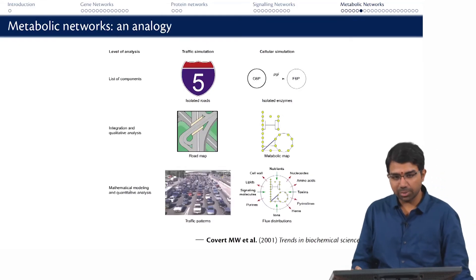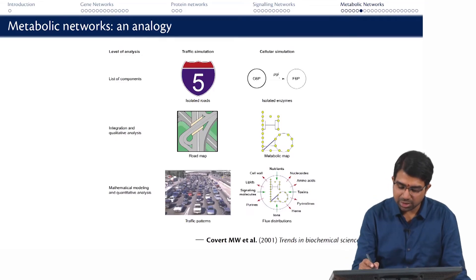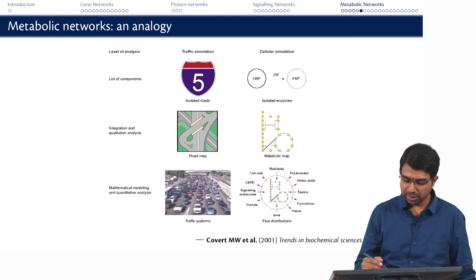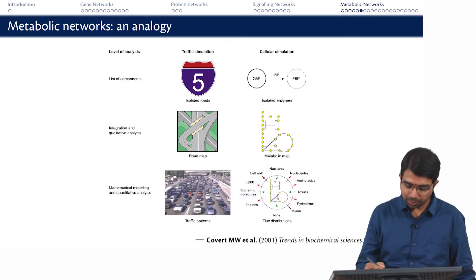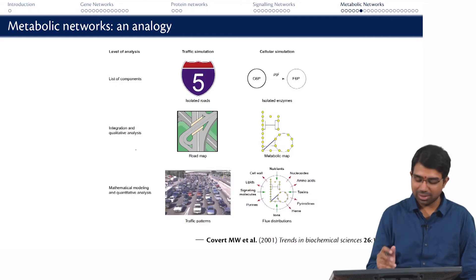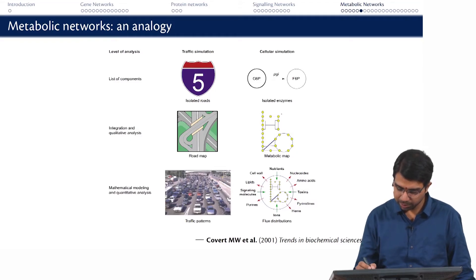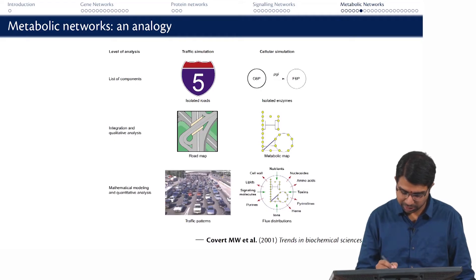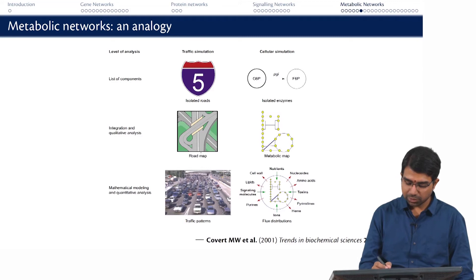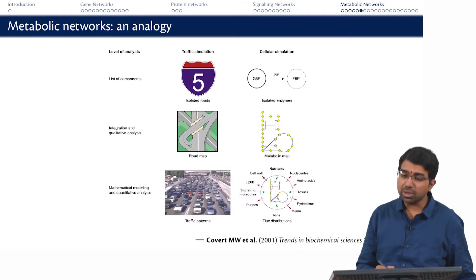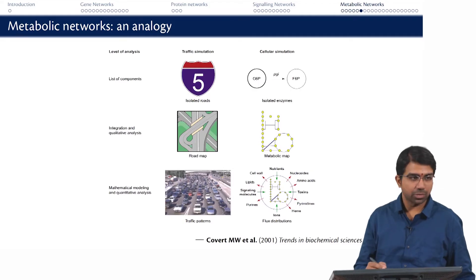To give you an analogy of what a metabolic network is, think of individual reactions as representing isolated roads in a city. A metabolic map looks more like a road map. From individual reactions, you can know whether there is a road between two junctions or two immediate places. The map tells you much more — whether it is possible to reach one metabolite from another, or one part of the city to another. The maximum amount of information comes when you actually look at the flux distributions, or the equivalent of how much traffic flows through which road.